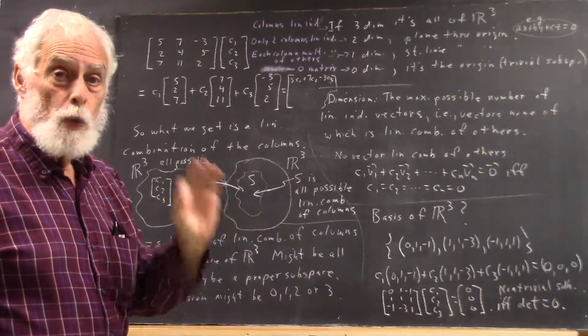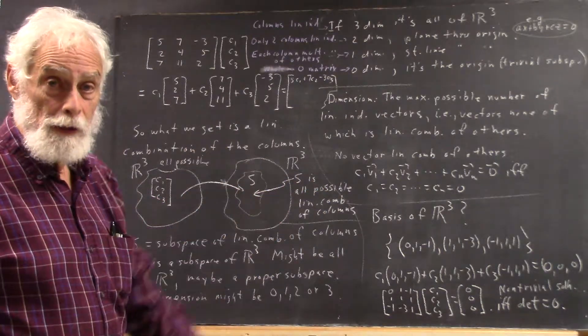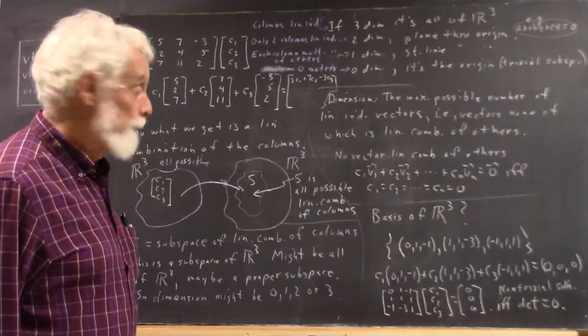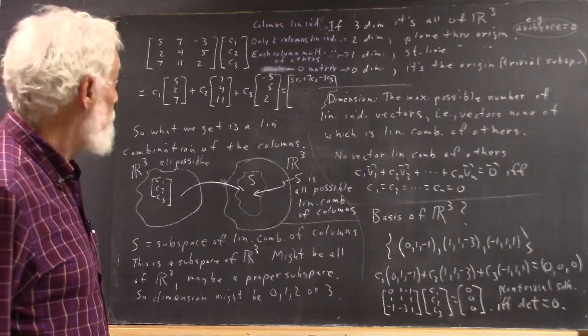So you could have one, two, or three linearly independent columns in this matrix. That's a very important idea.